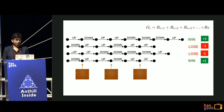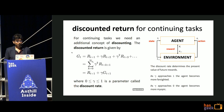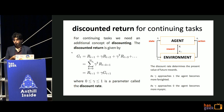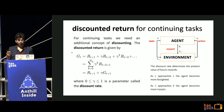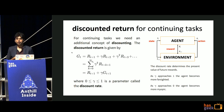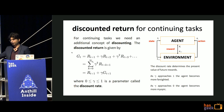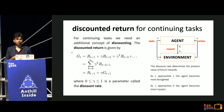The discount rate gamma represents the present value of future rewards - how much importance you give to future rewards versus current ones. As gamma approaches one the agent becomes more far-sighted, wanting to maximize the long run. As gamma approaches zero it's a myopic, greedy agent wanting to maximize only right now. This affects what kind of policies it will run depending on how you set gamma. So: policy is how I take actions, and return is the sum of rewards over one episode.